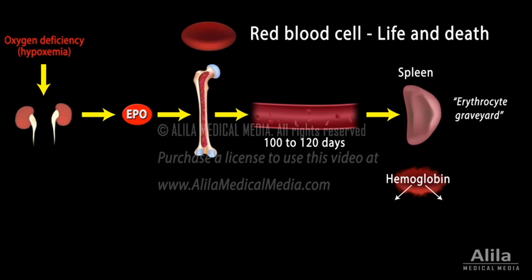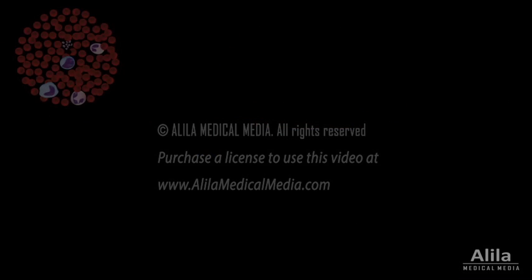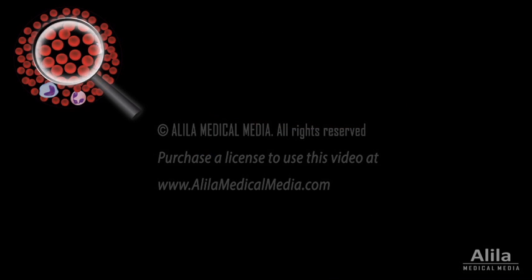Parts of the dead cells are salvaged to make new cells. Part of the heme is secreted into bile and disposed in feces. The number of red blood cells is strictly regulated and has important clinical significance.